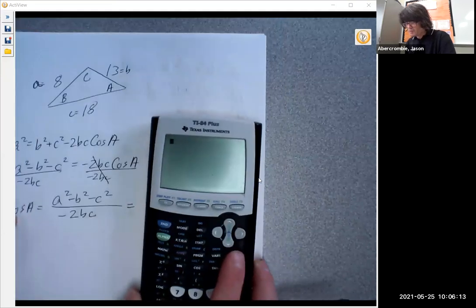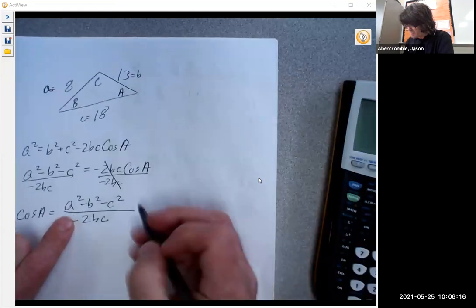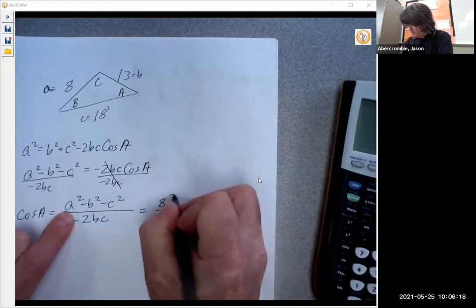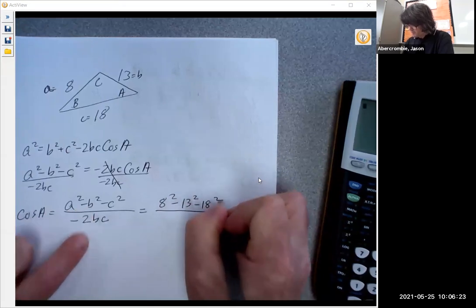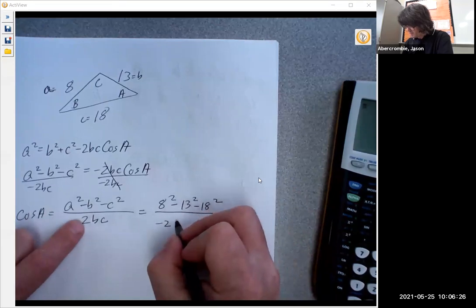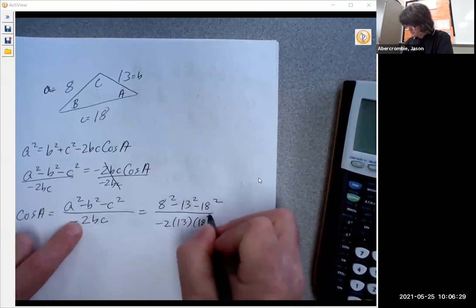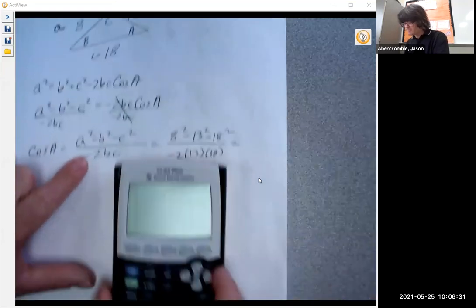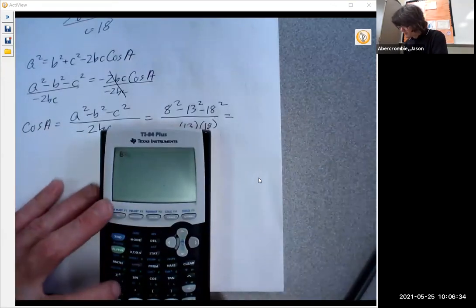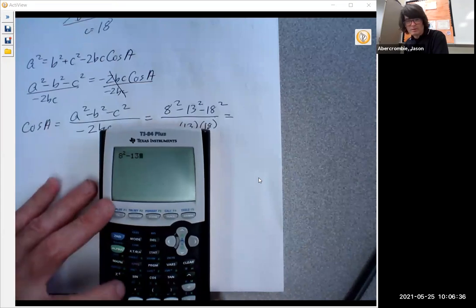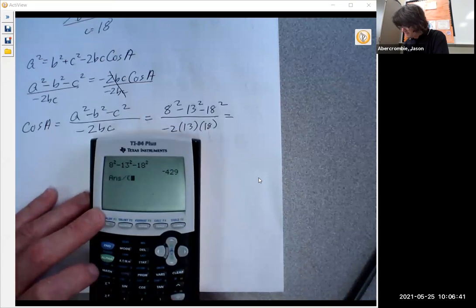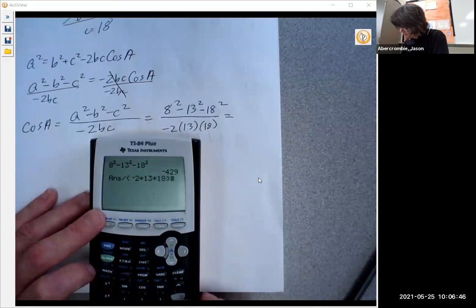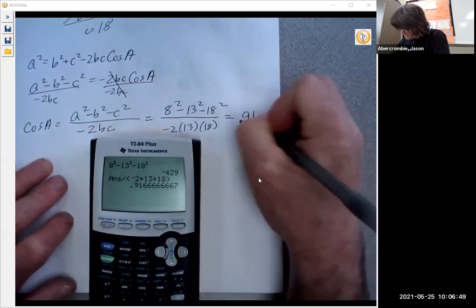If I want to plug in the numbers, we're going to have 8 squared. Let me just write this down. 8 squared minus 13 squared minus 18 squared over minus 2 times B, which is 13 times C. We'll figure out what that is. 8 squared minus 13 squared minus 18 squared on top is negative 429. Divide that by negative 2 times 13 times 18, and you get 0.9167.